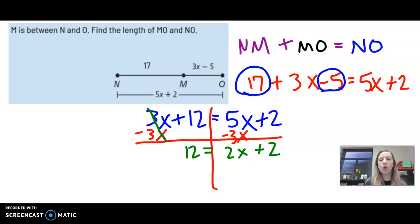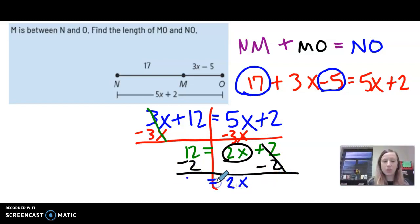Now to solve for x, we need to get rid of the plus 2 by minusing 2. Two minus 2 is zero, so we have 2x equals 10. And lastly, we divide both sides by 2. So we have found out that 10 divided by 2 is 5 and we have solved for x.